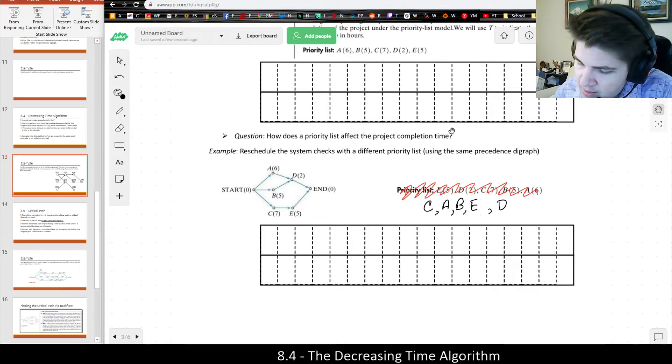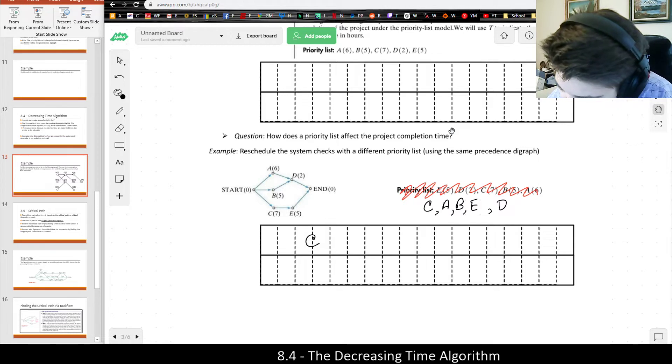So first up would be C. C is going to take seven hours. So C is going to be here. Highest priority. Seven. And I forget what colors I used last week. I'll just use red for C. Which would be seven.